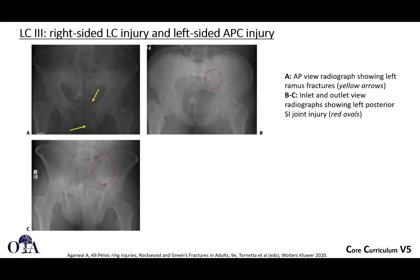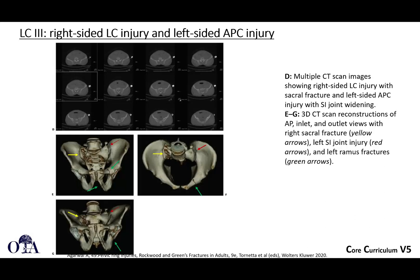The LC3 injury is the so-called wind-swept pelvis, where you have a right-sided lateral compression injury on one side and a left-sided APC-type injury on the other, producing widening on one side and compression on the other. This is considered an unstable pattern, as are LC2s. You can see impaction on one side and diastasis on the other.